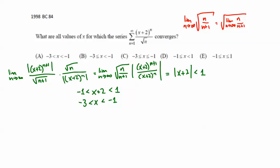Now, we still have to test the endpoints. x equals negative 3. With negative 3, we're going to end up with (-1)^n over square root of n. And that is - notice the alternating part there.